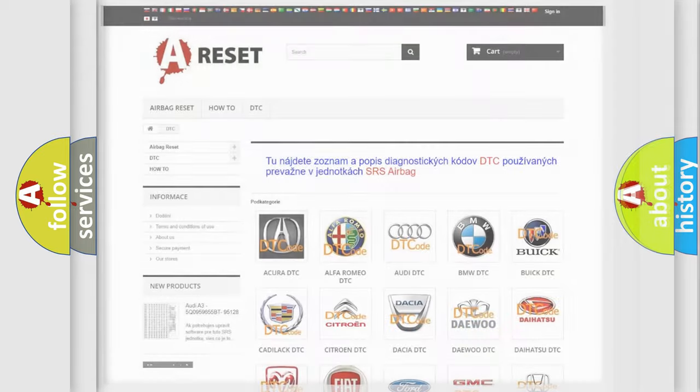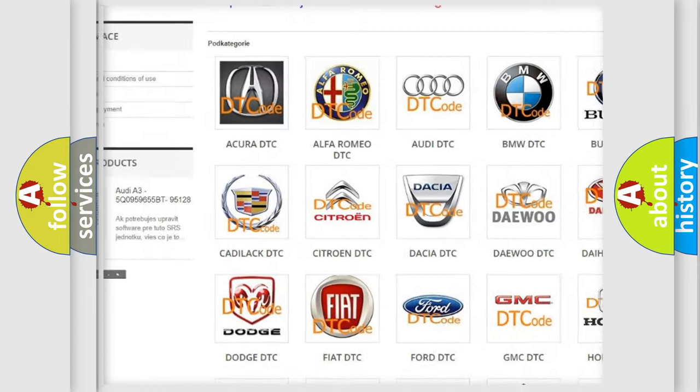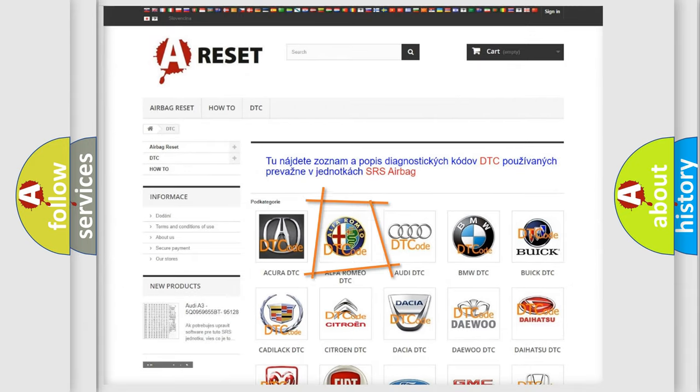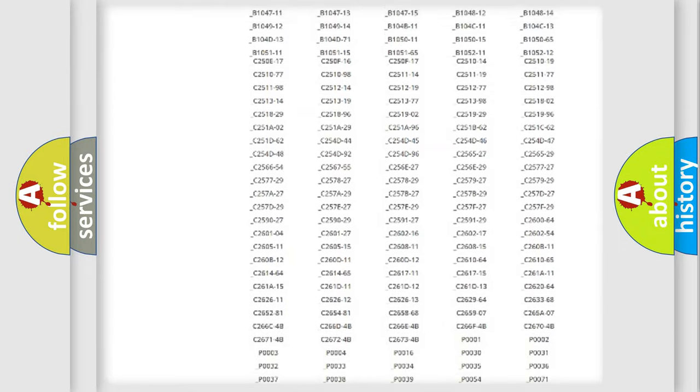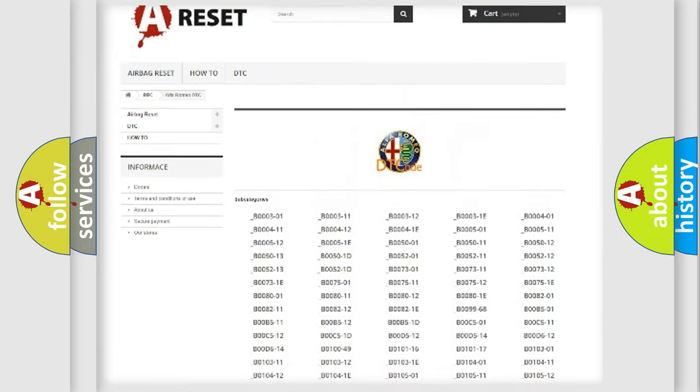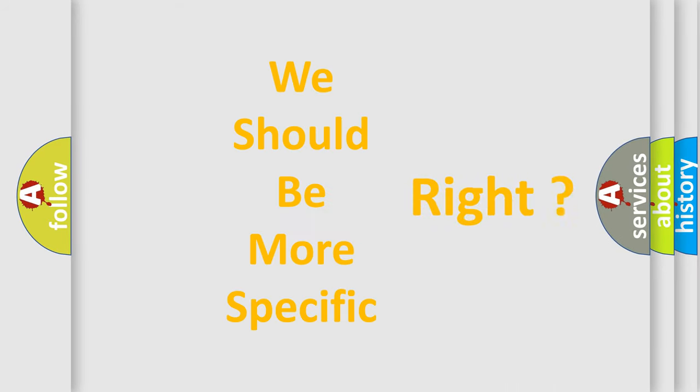Our website airbagreset.sk produces useful videos for you. You do not have to go through the OBD2 protocol anymore to know how to troubleshoot any car breakdown. You will find all the diagnostic codes that can be diagnosed in Alfa Romeo vehicles, and also many other useful things. The following demonstration will help you look into the world of software for car control units.